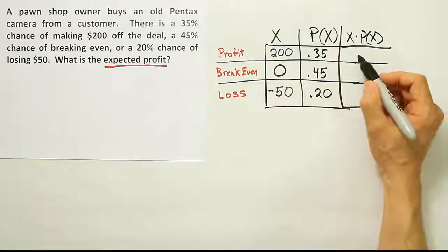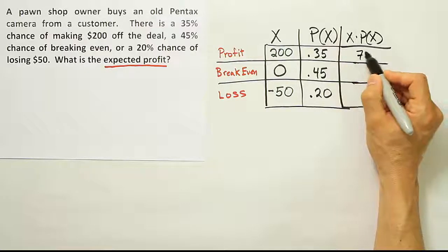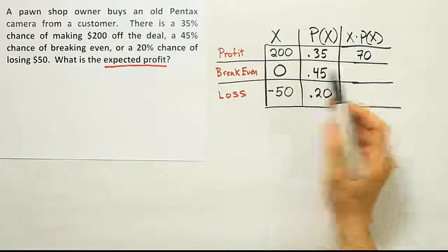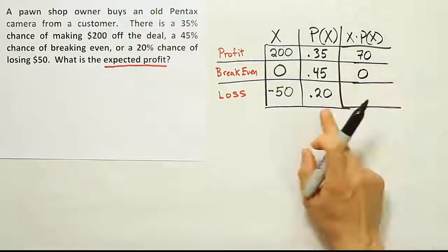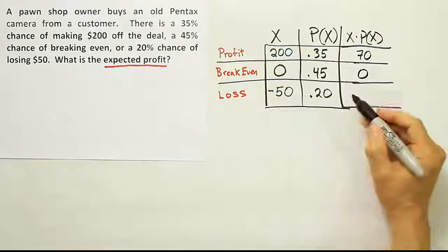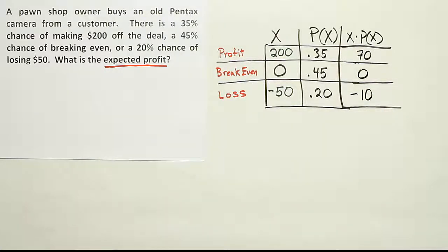Alright. So we'll do 200 times 0.35. That's going to turn out to be $70. Zero times 0.45, of course, will be 0. And 20% of negative 50 is negative 10.